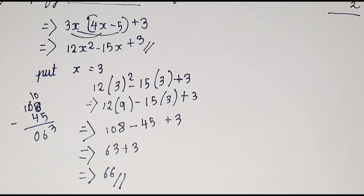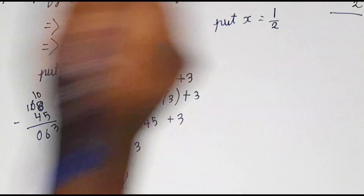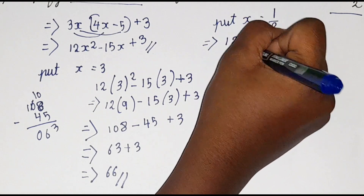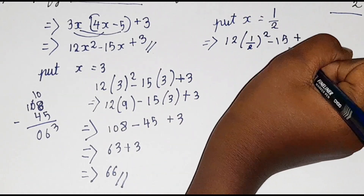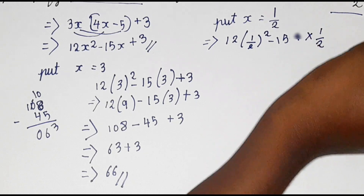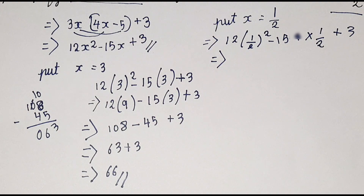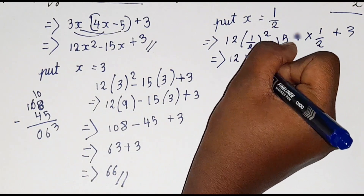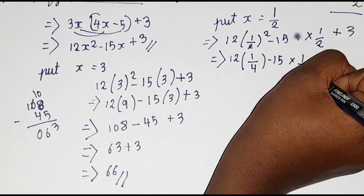Now what we are going to do is put x equal to 1 by 2. So now we are going to replace x as 1 by 2. We will write: 12 into 1 by 2 the whole square minus 15 into 1 by 2 plus 3. Before cancelling, let us finish the square values. So 1 by 2 squared is 1 by 4, giving us 12 into 1 by 4 minus 15 into 1 by 2 plus 3.